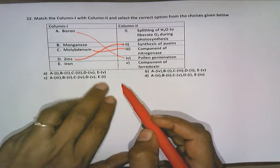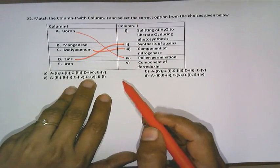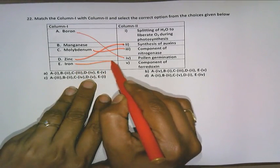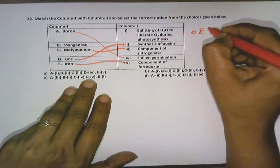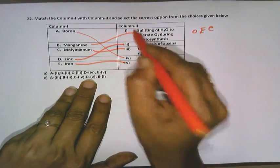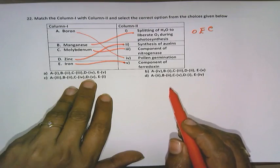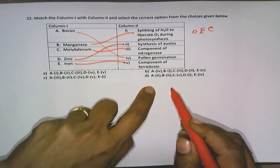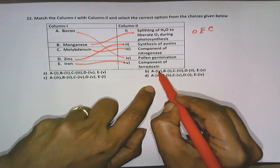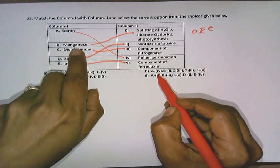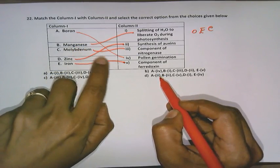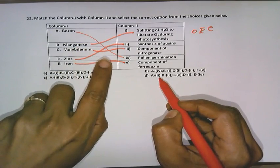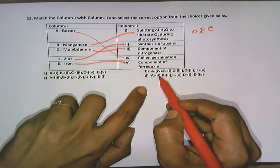As we move forward, iron is a very important component of the ferredoxin. So we have all the options except manganese connected. Manganese, we should remember that it is a very important component in the oxygen evolving complex, taking a role in the splitting of the water molecules. So which is the option? That is option A, that connects A with 4, boron with pollen germination. Manganese with 1, splitting of water. C, molybdenum with component of nitrogenase. Zinc, synthesis of auxin as well as iron, the component of ferredoxin.